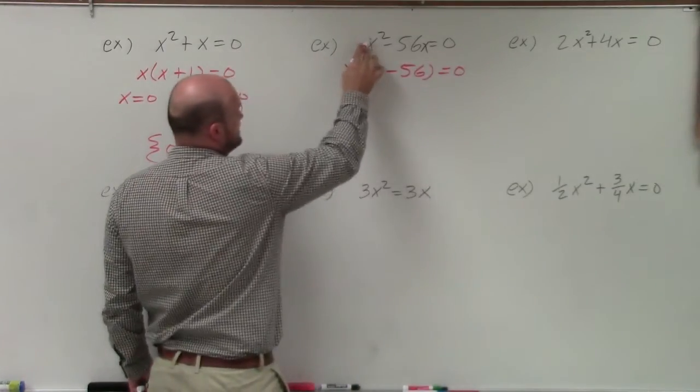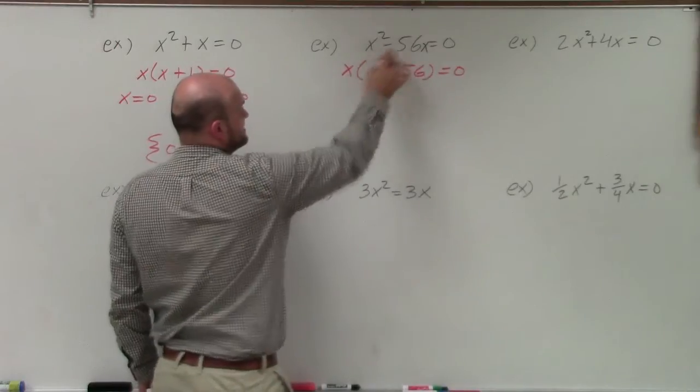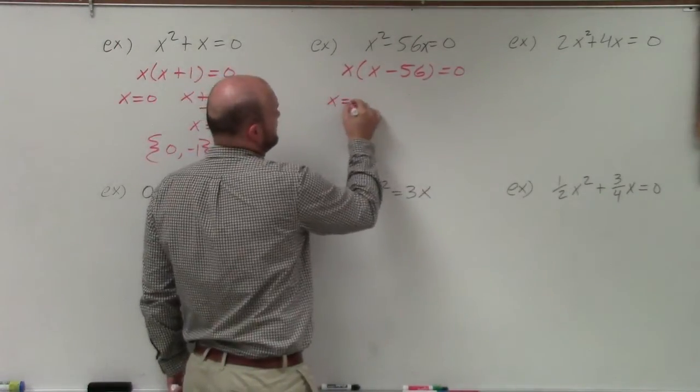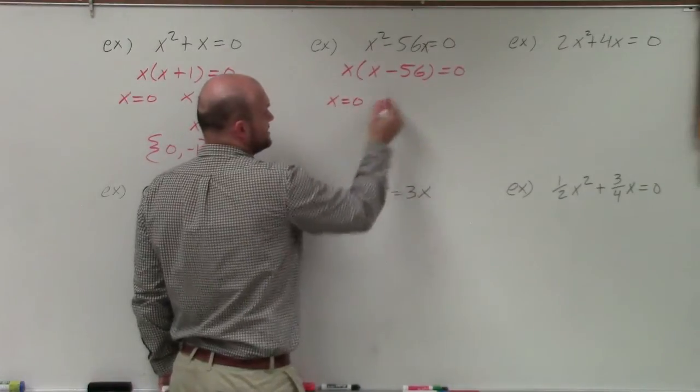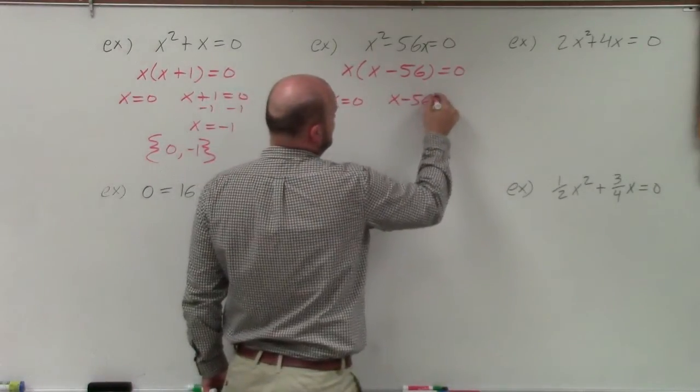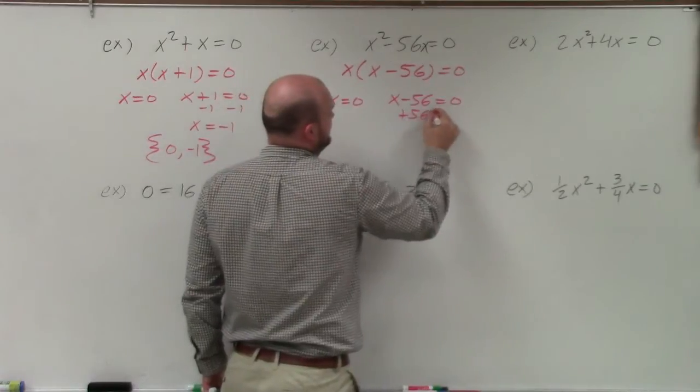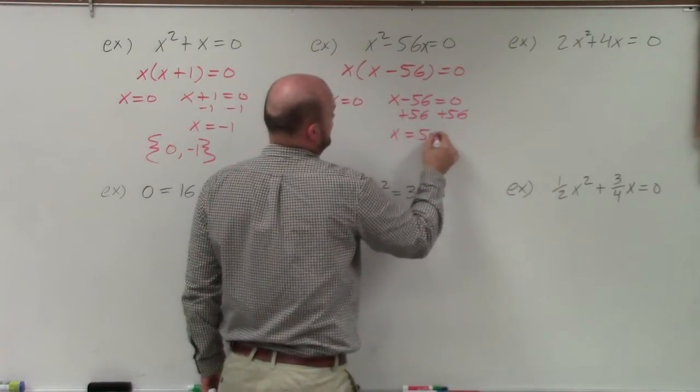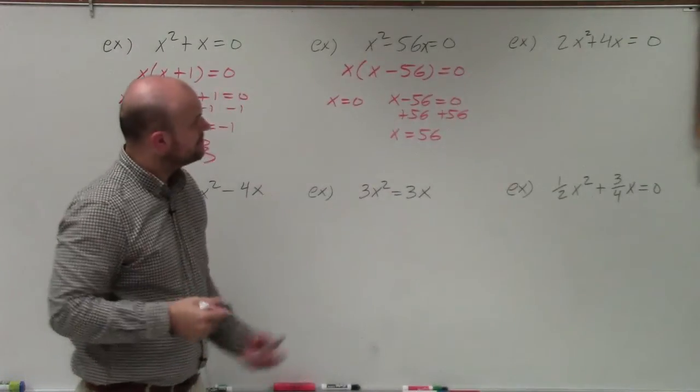x times x is x squared, x times negative 56 is negative 56x. Now I set both expressions equal to 0 using the zero product property. I can just simply go ahead and solve this. So I have x equals 0 and x equals 56.